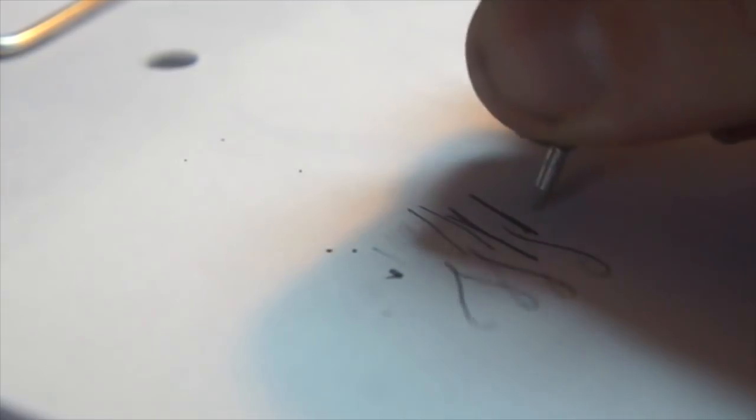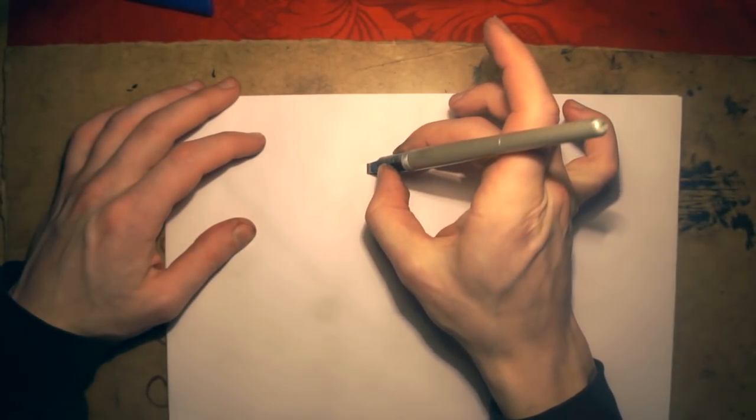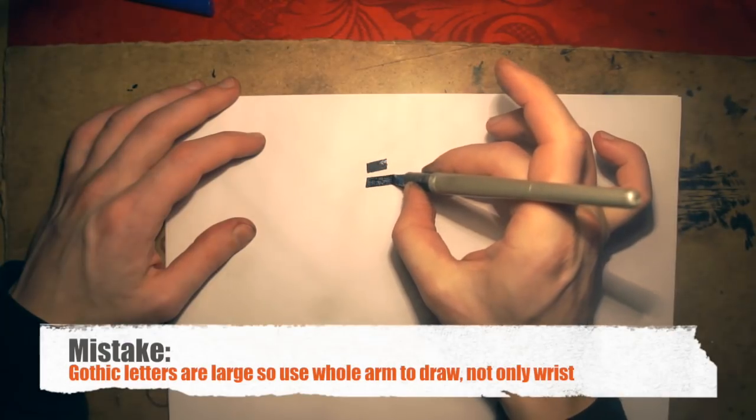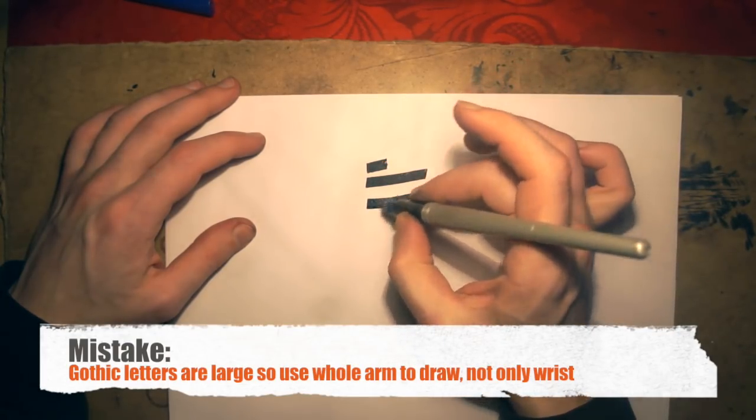In the Pilot, nibs only help ink to form square shape, so pressure doesn't change the thickness, so it should be even all the time. Push pen on the whole surface of the nib.